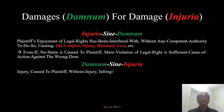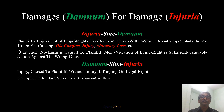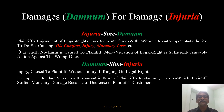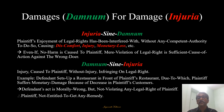The second case, damnum sine injuria, says injury is caused to the plaintiff without infringing on a legal right. The legal right is not violated but injury is caused. For example, the defendant sets up a restaurant in front of the plaintiff's restaurant, due to which the plaintiff suffers monetary damage because of a decrease in customers. The defendant's act of opening the new restaurant may be morally wrong, but it is not violating any legal right of the plaintiff, and therefore the plaintiff is not entitled to get any remedy. This is called damnum sine injuria — in spite of injury, damages will not be paid.